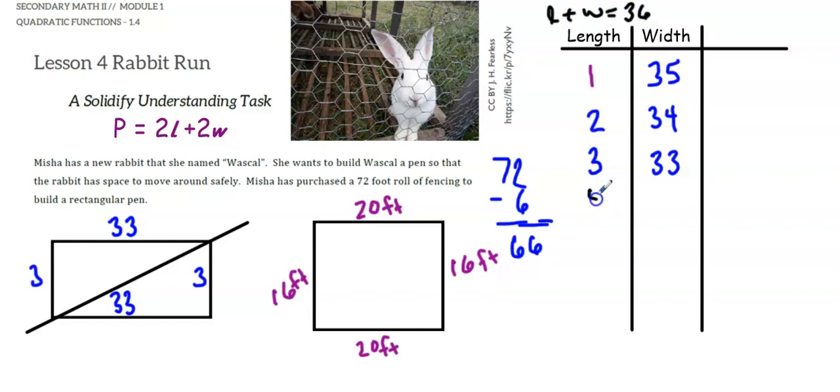Which means if I have a length of 4, the width would be 32. If I have a length of 5, the width would be 31. If I have a length of 6, then my width would be 30.